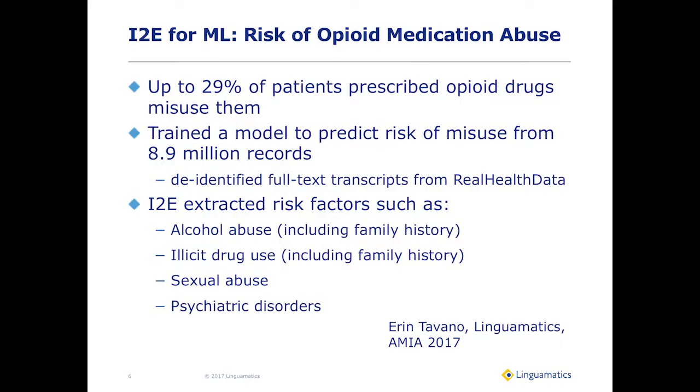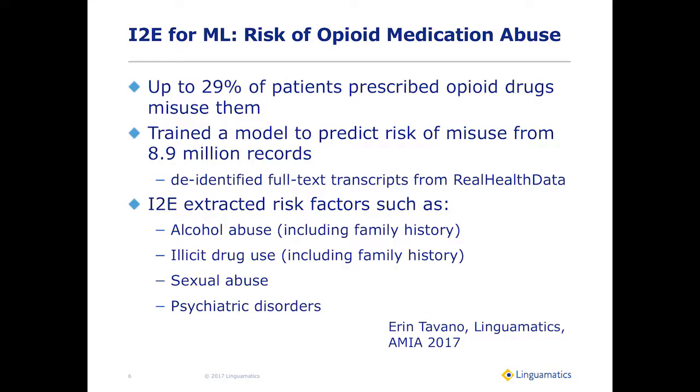It's actually better if you can use NLP to get into the data and get the right answers to then feed your machine learning models. We recently did a project looking at real health data records — Real Health Data partnered with us, and they have 8.9 million de-identified full-text transcripts. We looked at whether we could predict the risk of opioid medication abuse. We identified various risk factors — things like alcohol abuse, illicit drug use, sexual abuse, and psychiatric disorders — as features to push into the machine learning model.